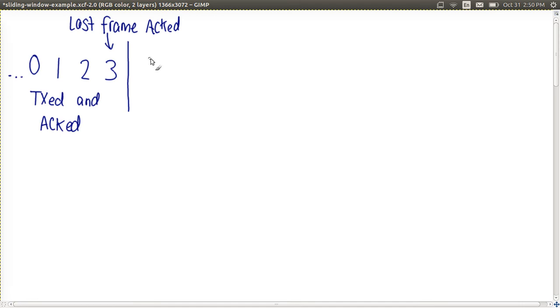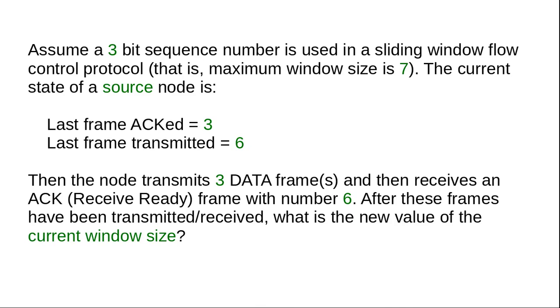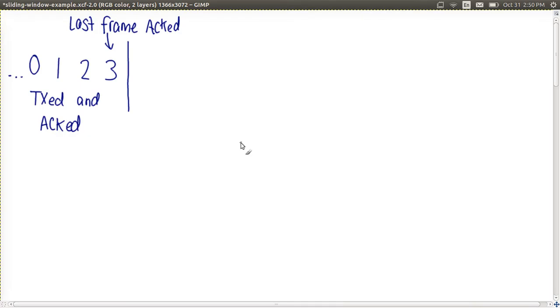Because we transmit frames in order, the next frame to deal with will be frame 4. Back to our question. We note that the last frame transmitted was number 6. So that means frames number 4, 5, and 6 have been transmitted at this point in time.